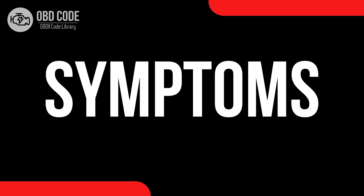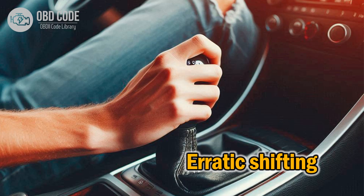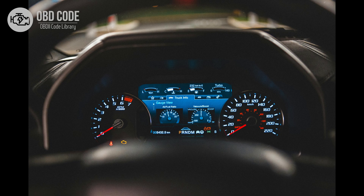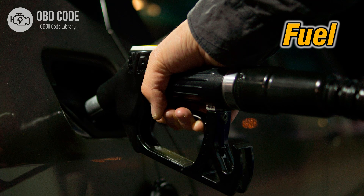Code symptoms P0974: 1. Erratic shifting. 2. Transmission slippage. 3. Illuminated check engine light. 4. Decreased fuel efficiency.